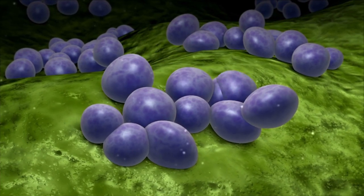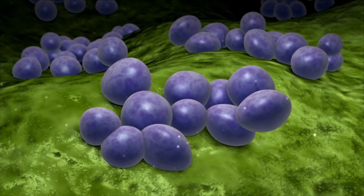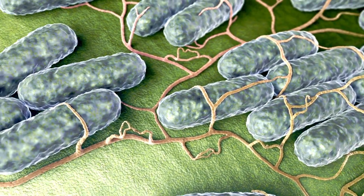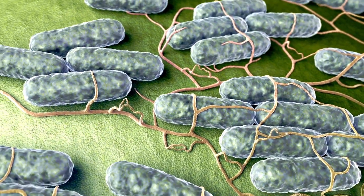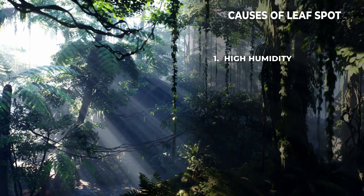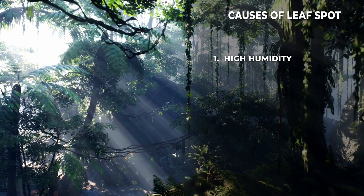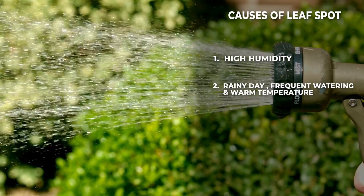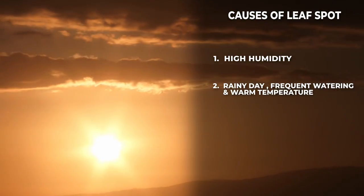These small brown or black spots occur due to attack of fungus or bacteria, but most of the time, leaf spot is caused by fungus. Sometimes, bacteria also causes leaf spot in your gardening plants. This disease development can be noticed when there is high humidity — that means when atmospheric air contains more moisture content with wet conditions, such as rainy days or frequent watering along with warm temperature.